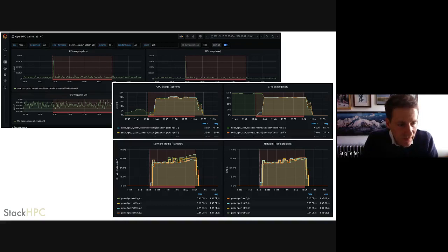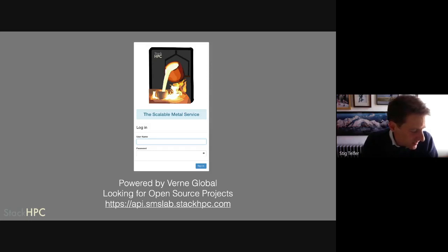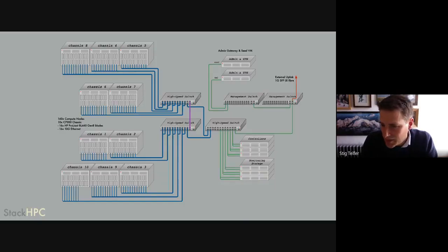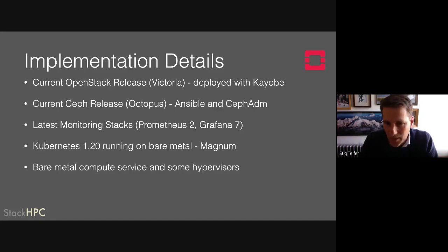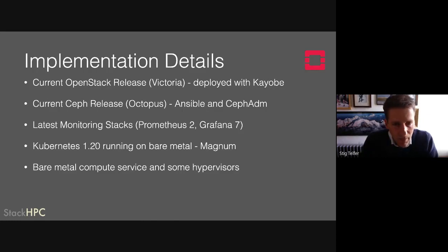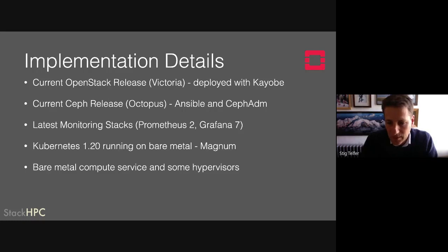A lot of the development work has been done in Cambridge, but also on another system called the Scalable Metal Service. This is a project we're working on with Verne Global, who have been providing hardware — what you might call second- or third-life hardware. We have 160 blades for a bare metal compute farm. The system is available for what you might call good causes: open source projects interested in having access to compute resources, things like CI node pools for OpenDev Infra. It's running a bare metal cloud with a restricted-trust tenancy service, where qualified users and vetted projects can make use of the service.